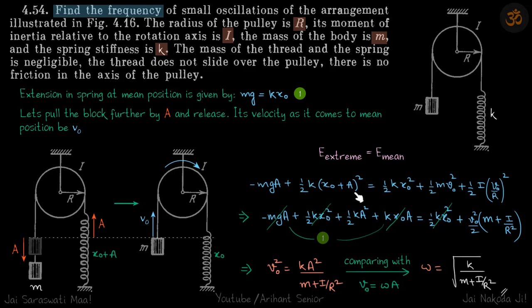When it crosses the mean position, gravitational energy is zero, kinetic energy of the block is ½mv₀², and kinetic energy of the pulley is ½Iω², where ω = v₀/r.